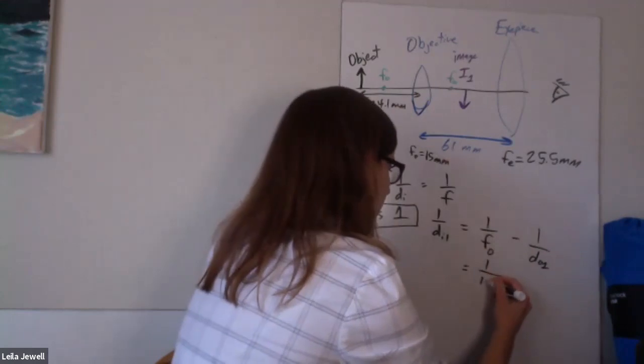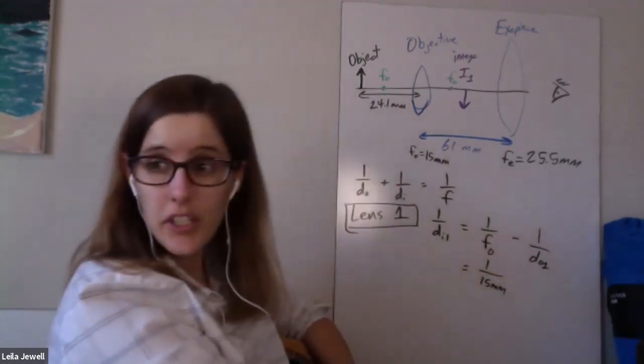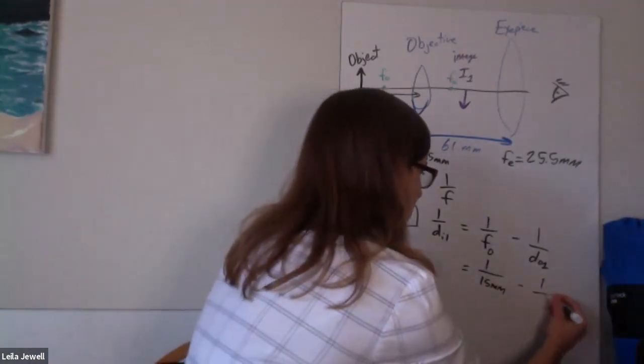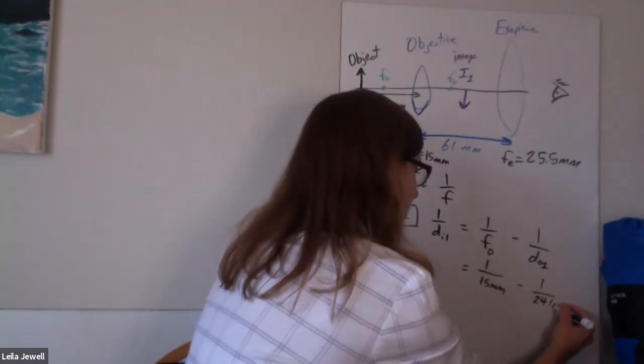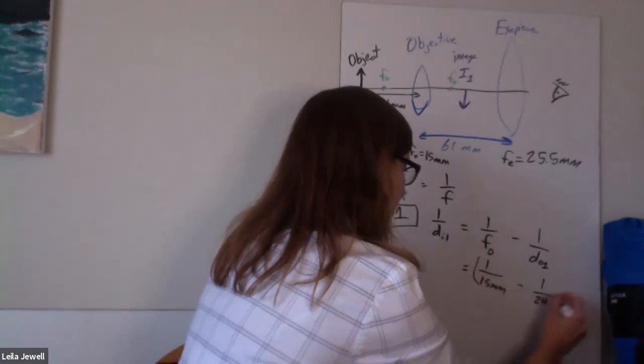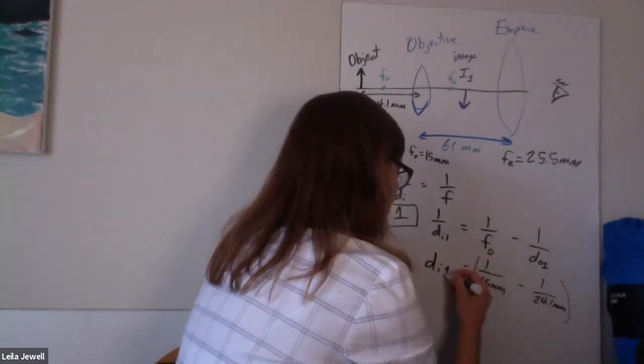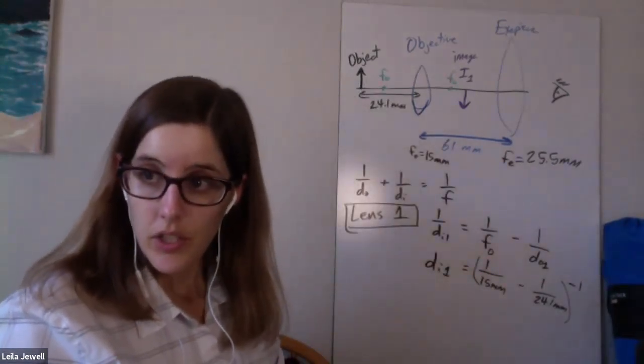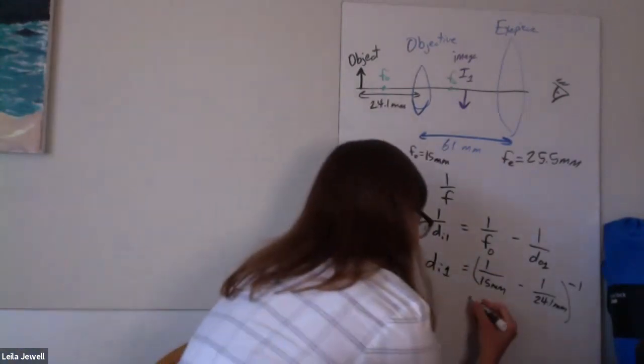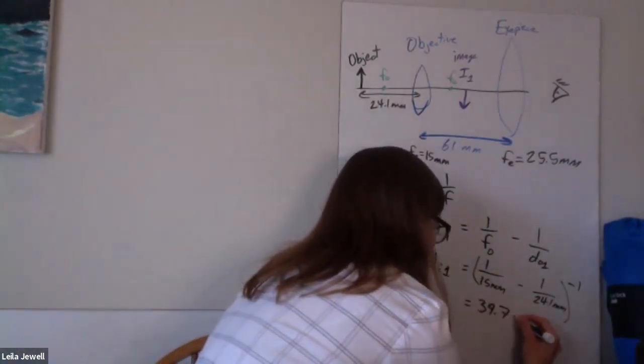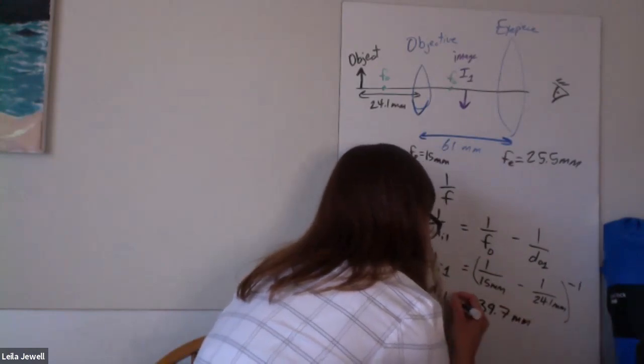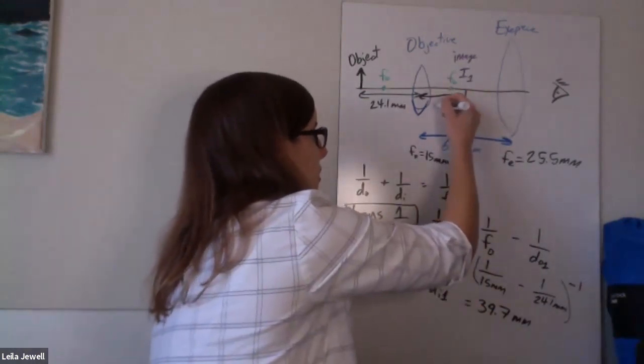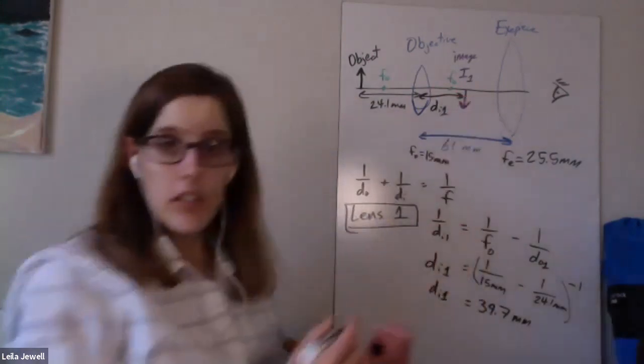So we'd have that. This is one over 15. And I'm going to work in terms of millimeters, because as long as I'm consistent, everything will be fine in terms of millimeters. One over 15 minus one over the 24.1 millimeters. And if I want to get it in terms of di one, then I'm going to need to take the inverse of all of that to raise it to the first power. And so if you do that, you should be able to get in your calculator 39.7 millimeters. So that's this distance here. Again, my picture is not to scale. And I apologize for that.